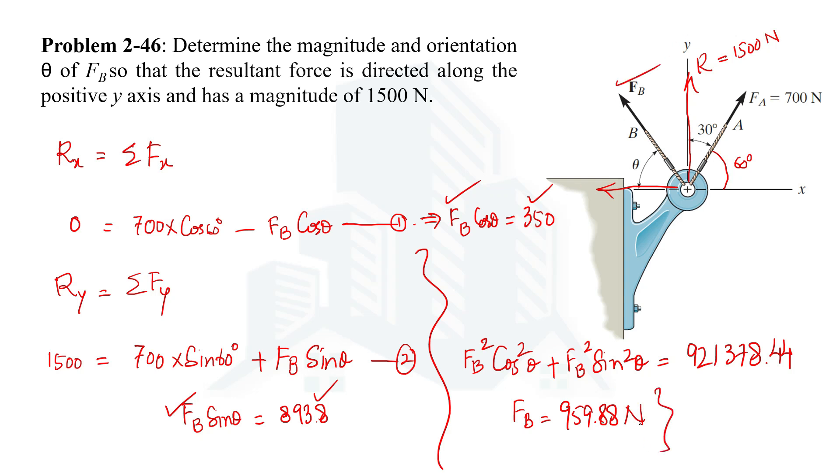Now putting this value in this equation or in this equation we can determine theta angle. Let's put it into the first one. So it will be 959.88 cos theta equal to 350. Then theta would be equal to 68.6 degrees. So now we have calculated the magnitude of Fb and also its orientation.